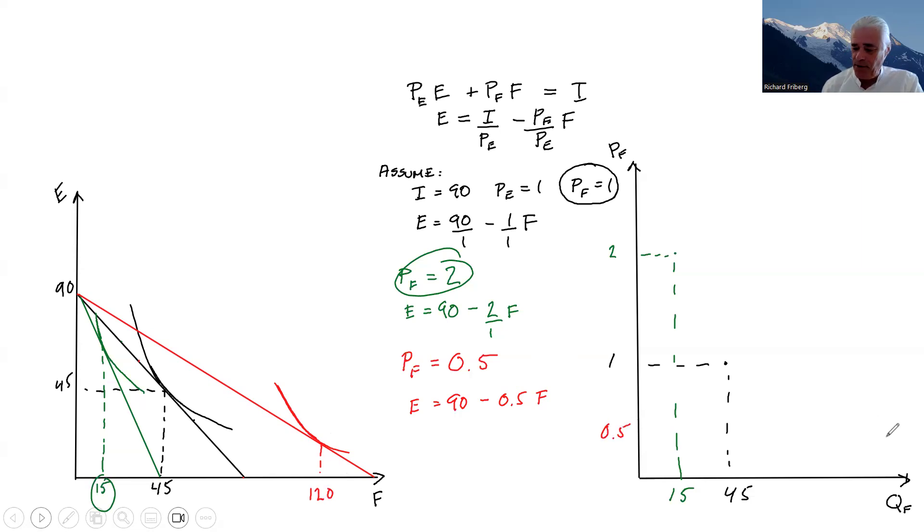Okay, so that gives us a third point on a demand curve. And we can then tie these points together, and we could conceptually think of a large number of such changes, keeping other things equal, income and the price of E. And this is a demand curve. So simple in principle, but a useful fact for many things that we want to examine in economics, where we can tie a demand curve, something that we can observe, different choices at different prices, to something that we, in principle, cannot observe - indifference curves and utility functions.